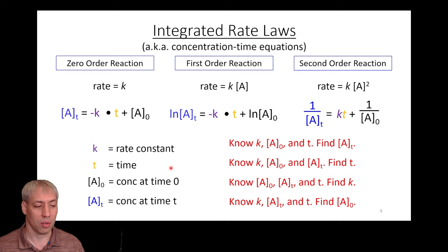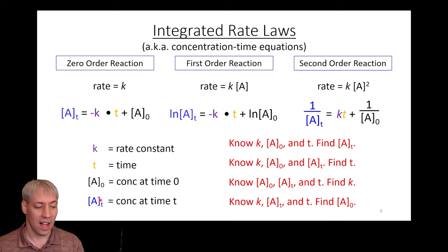If you know the rate constant, your starting concentration, and how long you've waited, you can figure out how much concentration is left. Likewise, if you know the concentration you want to reach and you have the rate constant, you can do the math to figure out when to stop the reaction. It's a really convenient form because all of a sudden we have t in the equation along with your starting point and your ending point.